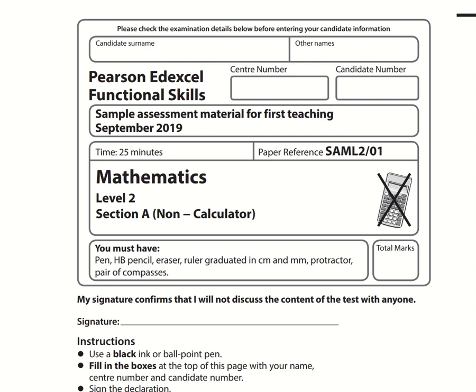Here are the video solutions for Pearson Functional Skills Maths. This is the sample assessment material for first teaching September 2019. And this is level 2 section A, which is the non-calculator section.